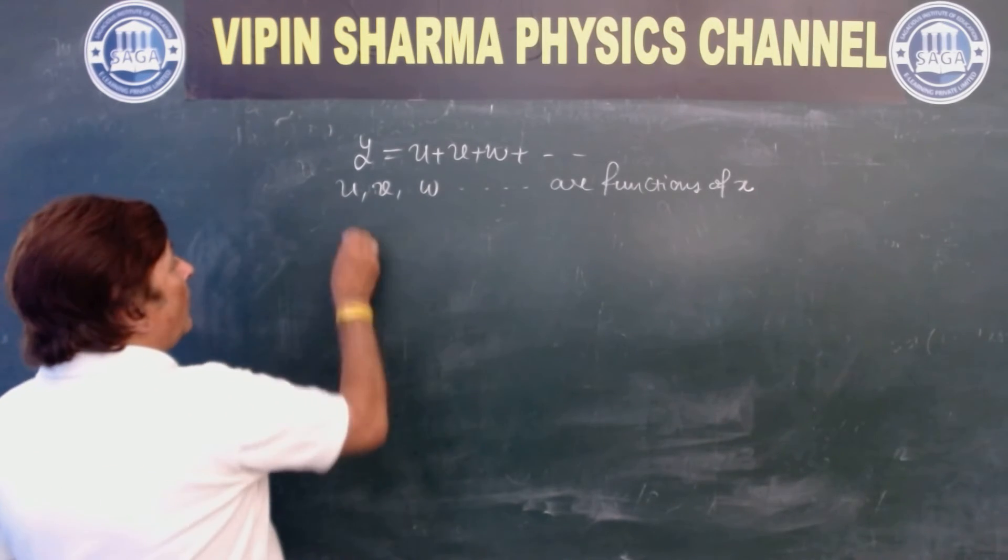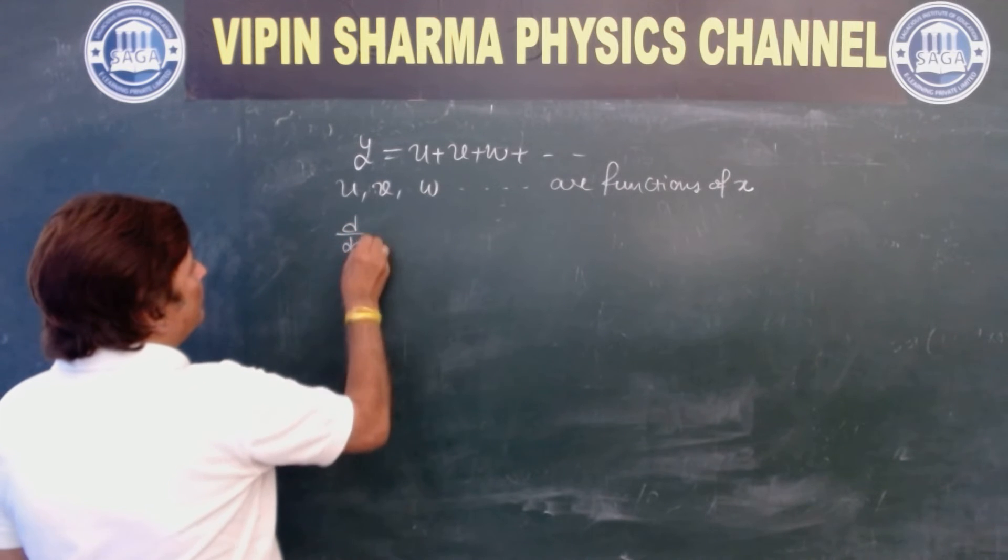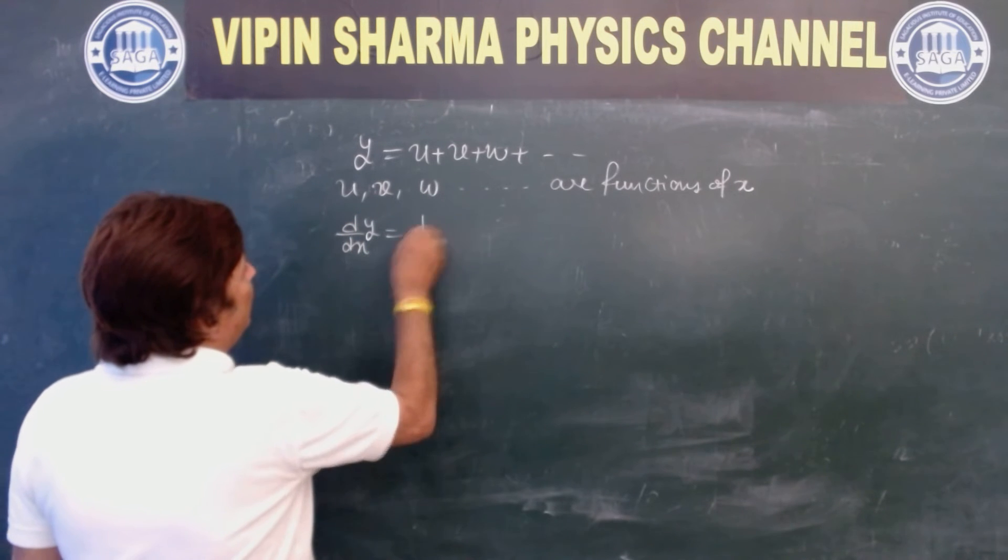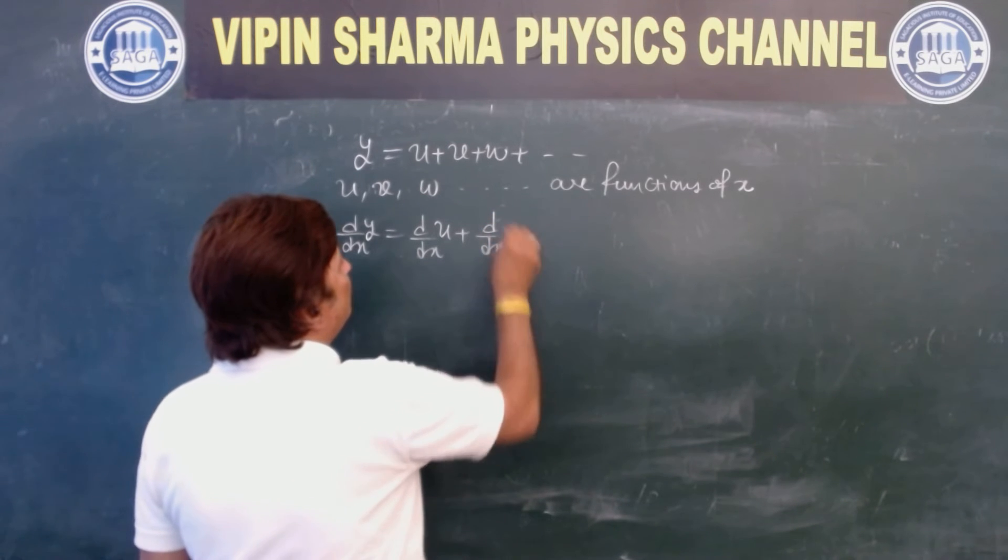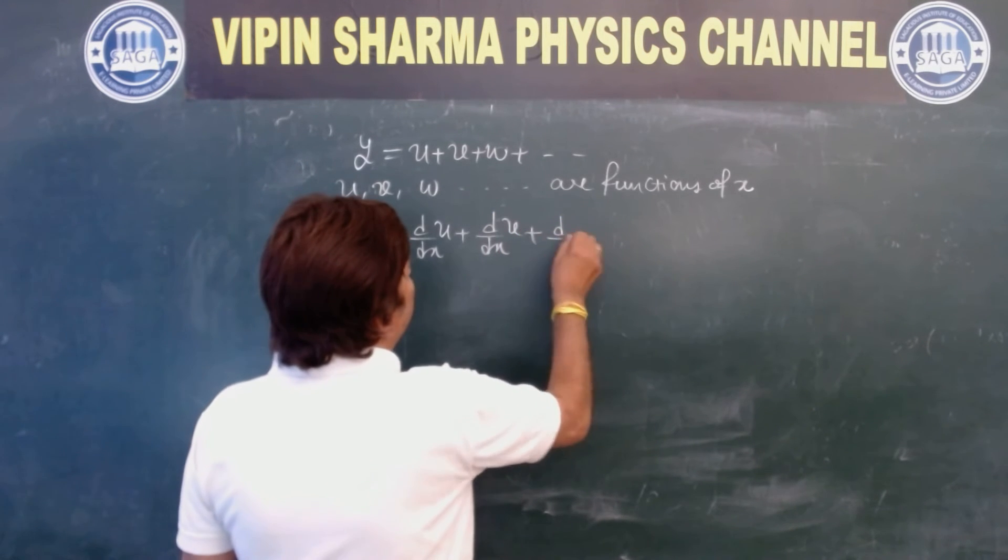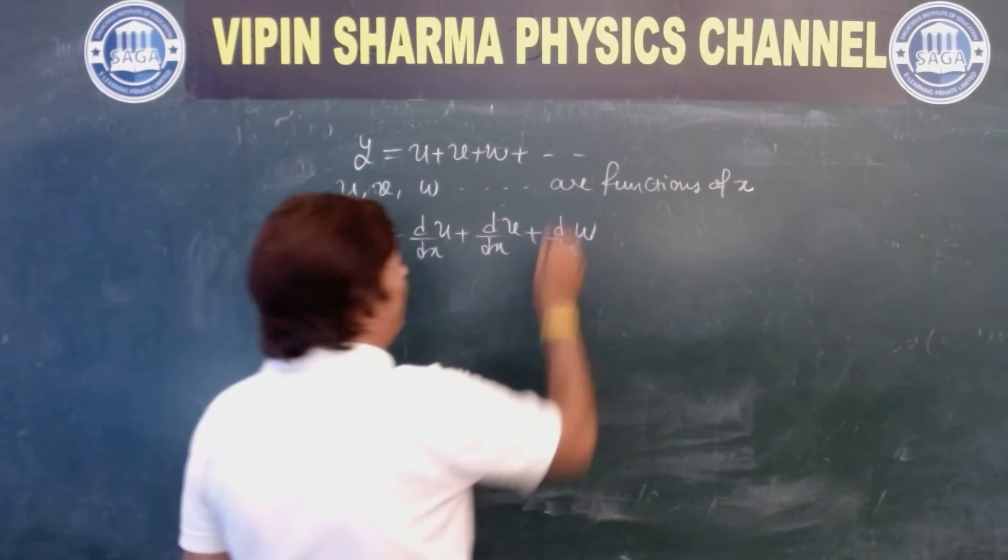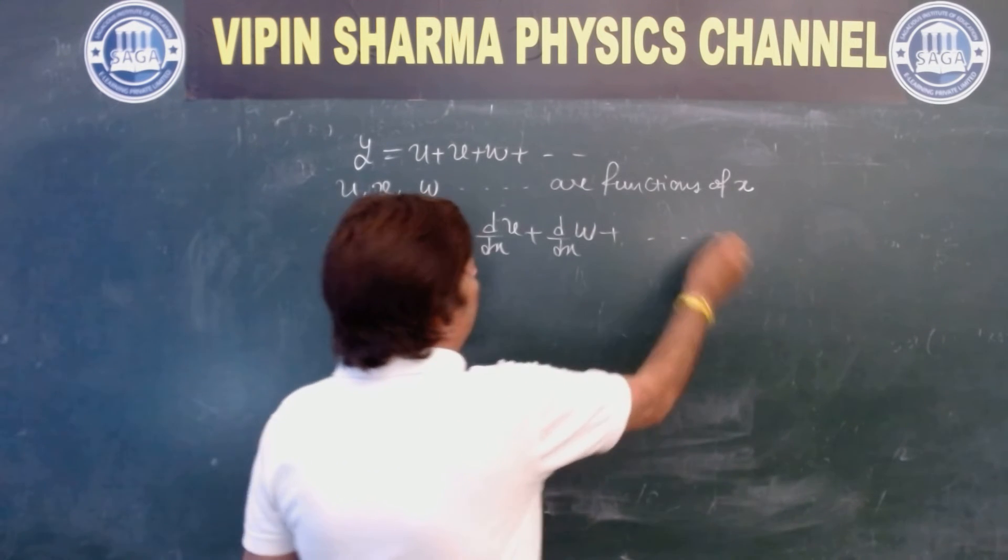So what is d/dx of y? That is d/dx of u plus d/dx of v plus d/dx of w and so on.